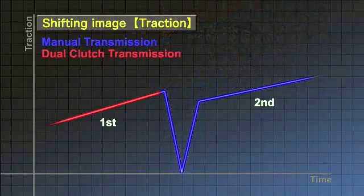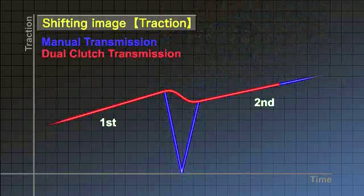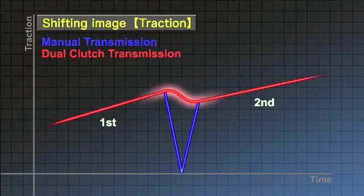The dual clutch transmission has two clutches that engage and disengage alternately without interruption. This leads to seamless gear shifting that doesn't interrupt the driving force.